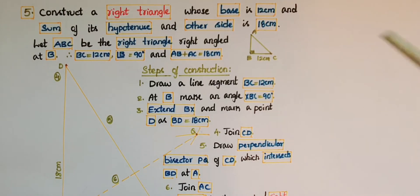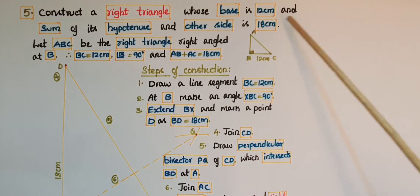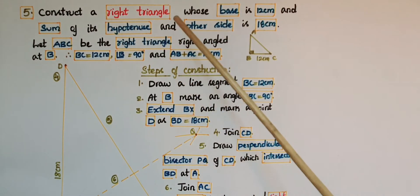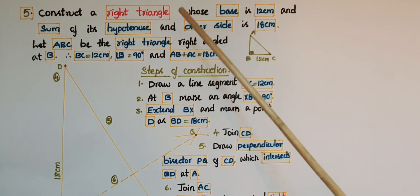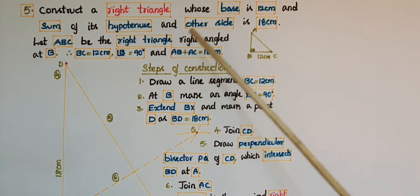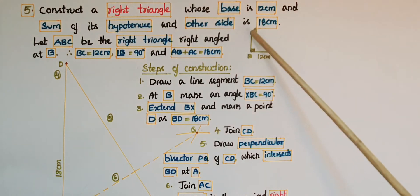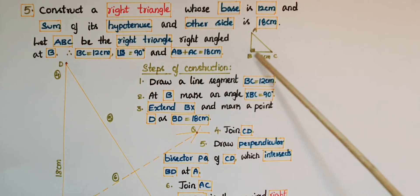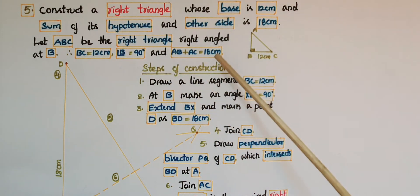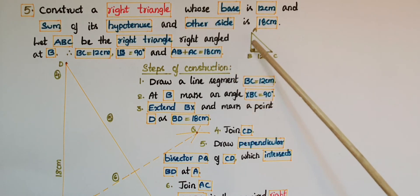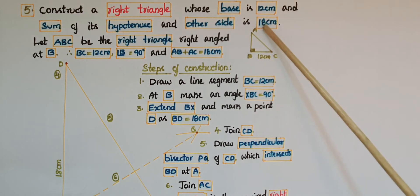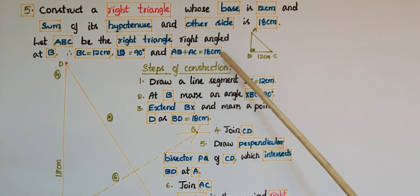This is the fifth problem: construct a right triangle whose base is 12 centimeters and the sum of its hypotenuse and other side is 18 centimeters. Let ABC be the right triangle with the right angle at B. Here base BC is equal to 12 centimeters, angle B is equal to 90 degrees, and the sum of hypotenuse AC and other side AB is 18 centimeters, so AB plus AC equals 18 centimeters.